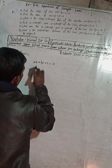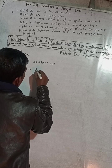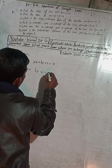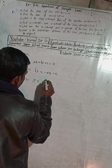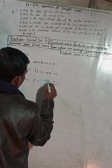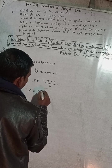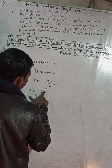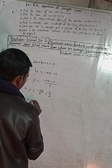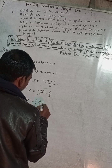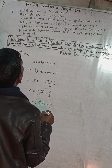Moving +ax to the other side gives -ax, and +c becomes -c. So by = -ax - c. Dividing both sides by b: y = (-a/b)x - c/b, which can be written as y = (-a/b)x + (-c/b).